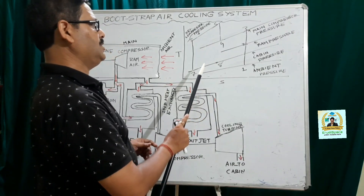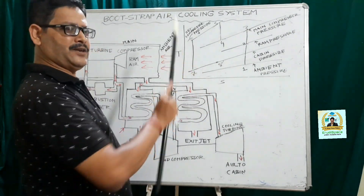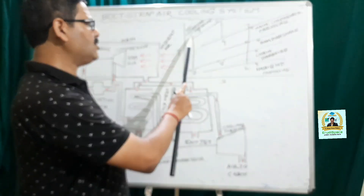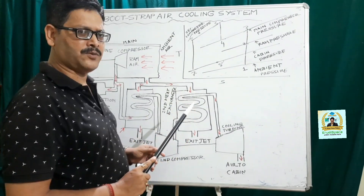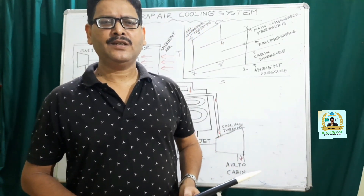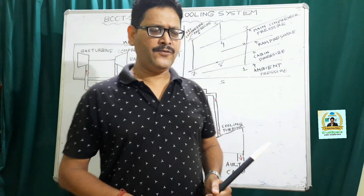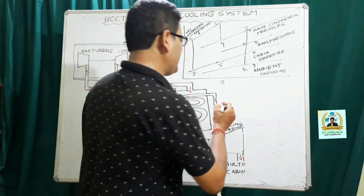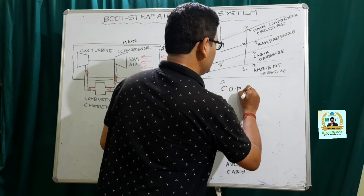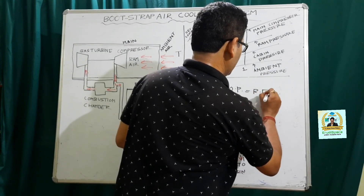The same is true for the compression taking place in the second compressor — it also occurs with some increase in entropy. Similarly, as far as the expansion is concerned, the expansion also takes place with some increase in entropy. Now, the coefficient of performance represents the performance parameter of any refrigeration system. As far as the COP is concerned, COP is always the ratio of the refrigerating effect divided by the work input.